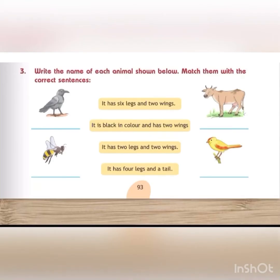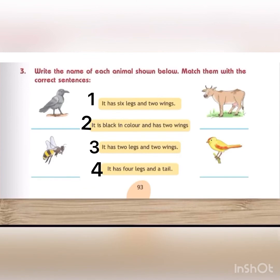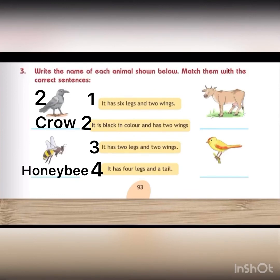Now let's discuss exercise number 3. Write the name of each animal shown below and match them with the correct sentences. First, you can see there is a black bird with two wings — this is a crow. It is black in color and has two wings. Then, the next one has six legs and two wings — write honeybee and match it.